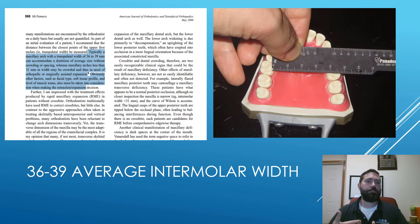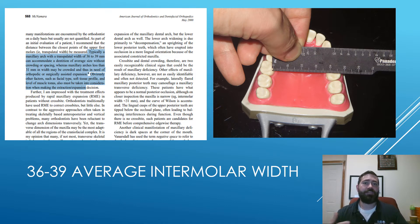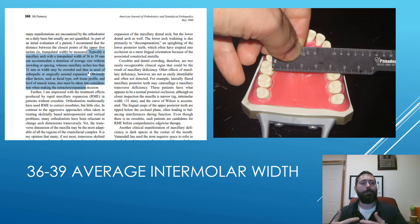In another article published in the American Journal of Orthodontics and Dental Facial Orthopedics, McNamara highlights that typically a maxillary arch with a trans-palatal width of 36 to 39 millimeters on average can accommodate the size of the teeth, and anything under 31 millimeters may be crowded and in need of orthopedic or surgically assisted expansion.